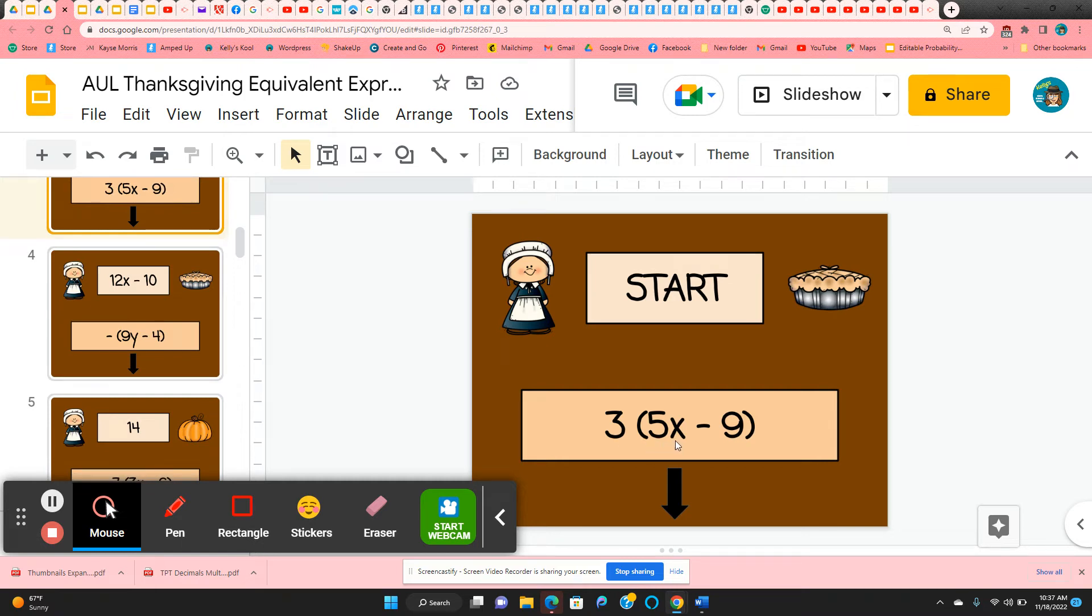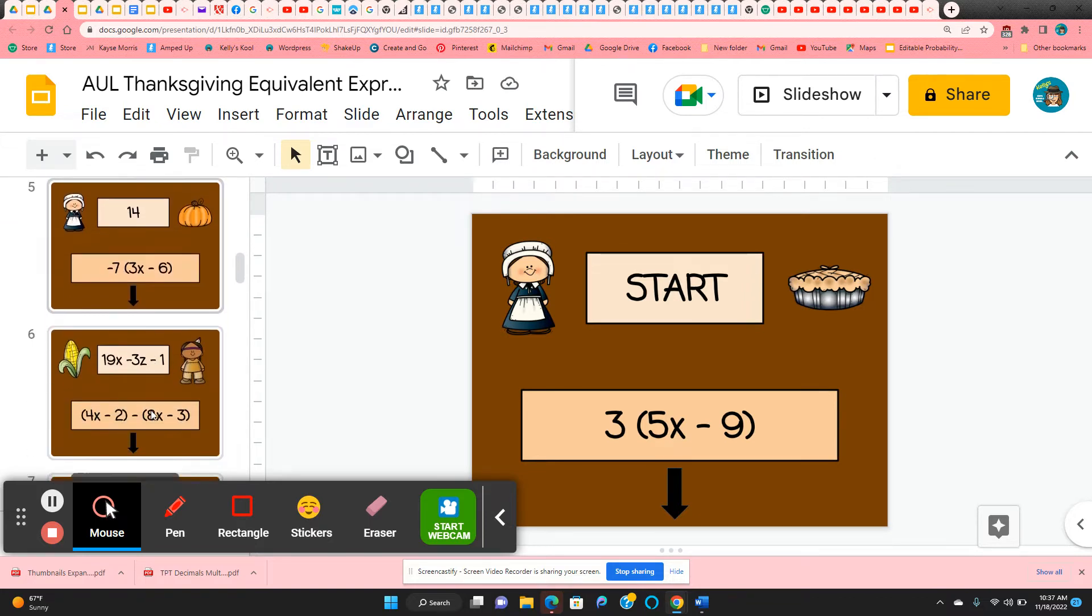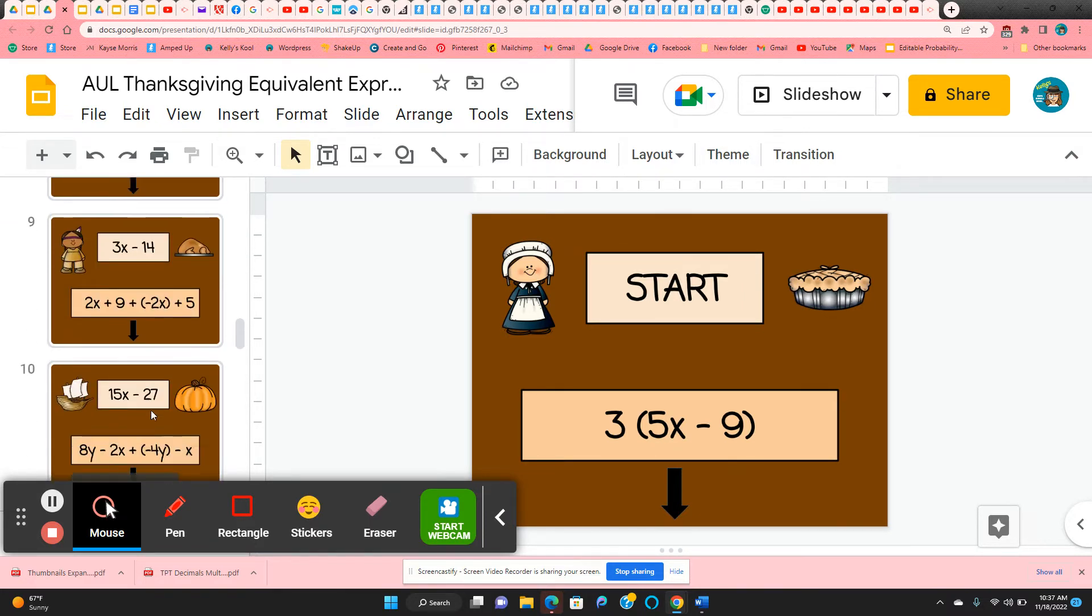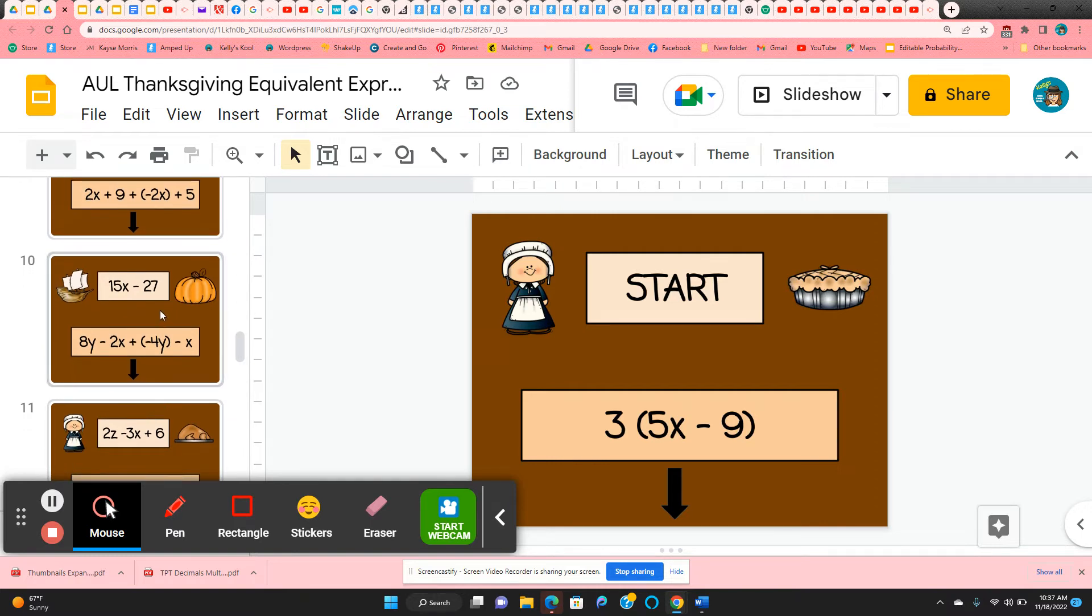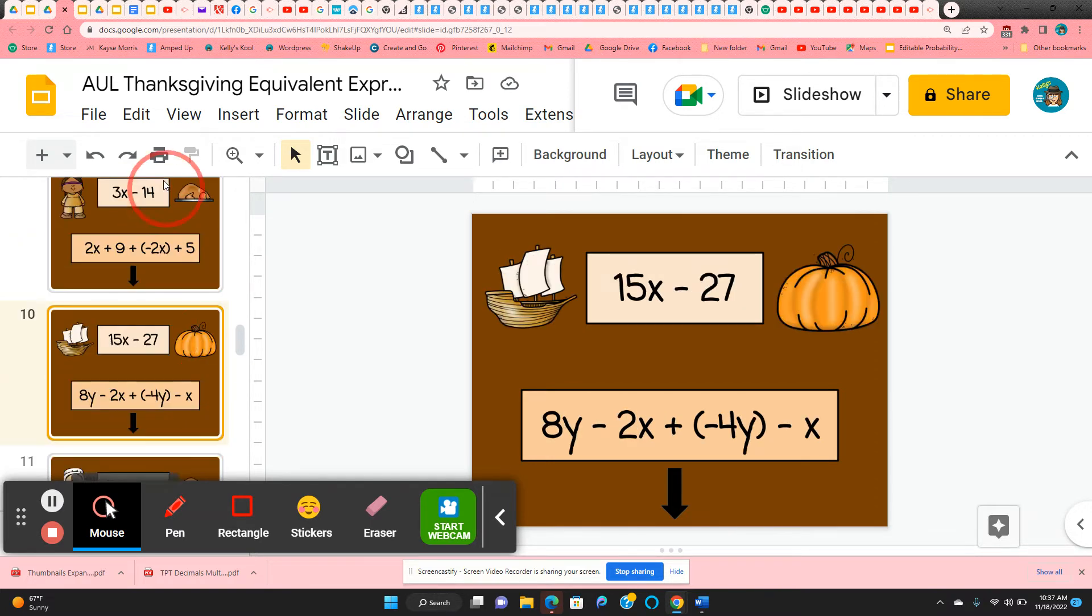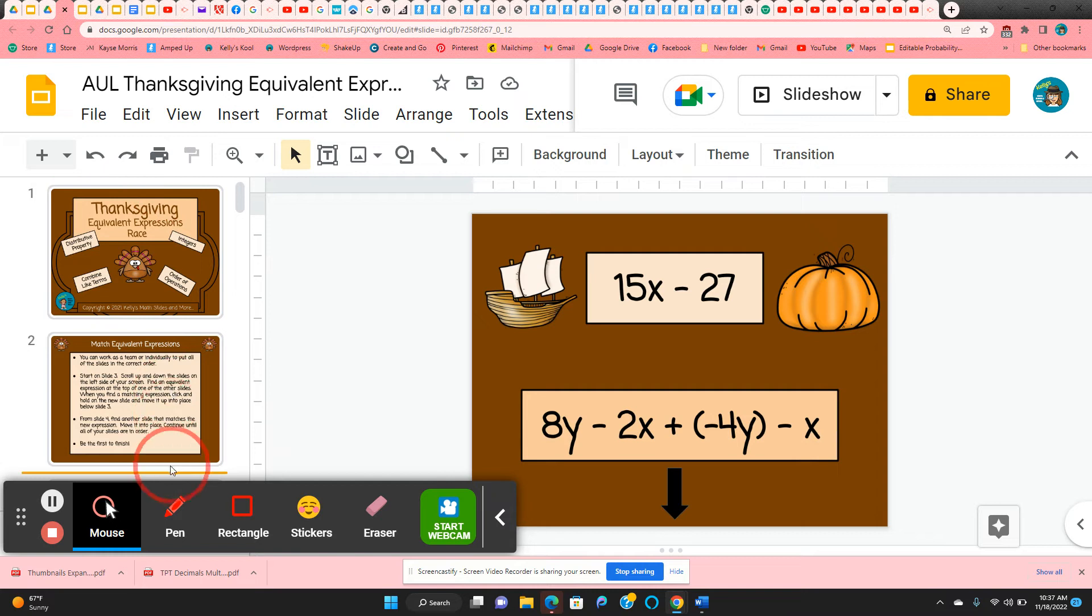So they want to find a slide that has 15x negative 27 and that would be up at the top. 15x negative 27. They're going to scroll up and down until they find it. Then they click and hold and move it into place.